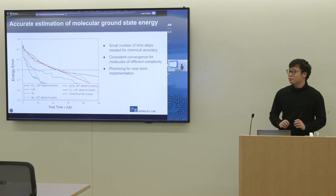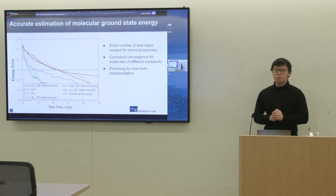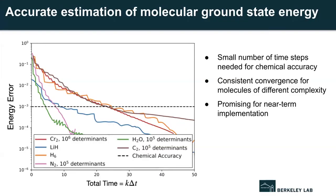For a numerical illustration, let's first look at the ground state problem. Here we fix some time step delta T of our time evolution, and we plot the energy error versus the total number of time steps taken. The convergence is rather rapid and consistent across different molecules, ranging from hydrogen chain to more complex chromium dimer. The chemical accuracy is indicated as this horizontal dash line. The convergence plot empirically shows time evolution is indeed pretty good for extracting the lowest energy up to chemical accuracy.